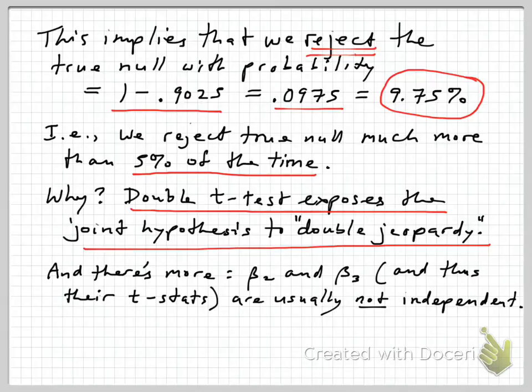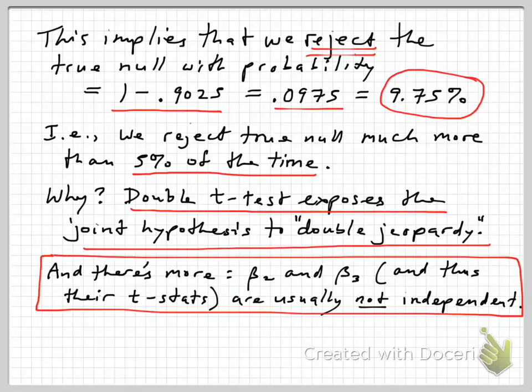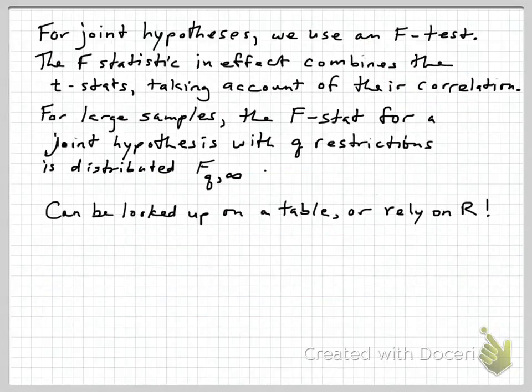The double t-test makes the mistake of exposing our joint hypothesis to double jeopardy. It can be rejected in two different ways. If we don't reject it on β₂, we subject it to the β₃ test, and that leads us to over-reject. If that were the only problem, you could adjust the size of the test. But there's another issue: β₂ and β₃, and therefore their t-statistics, are actually not usually independent. The calculation of rejection probability is more complicated because they could move together or apart across samples.